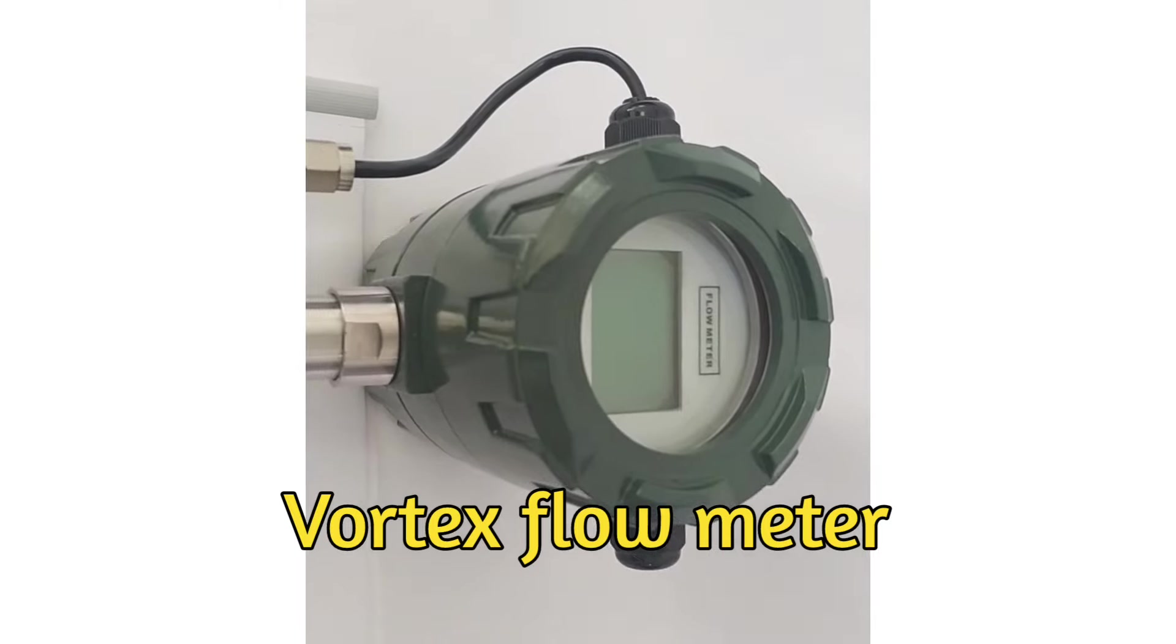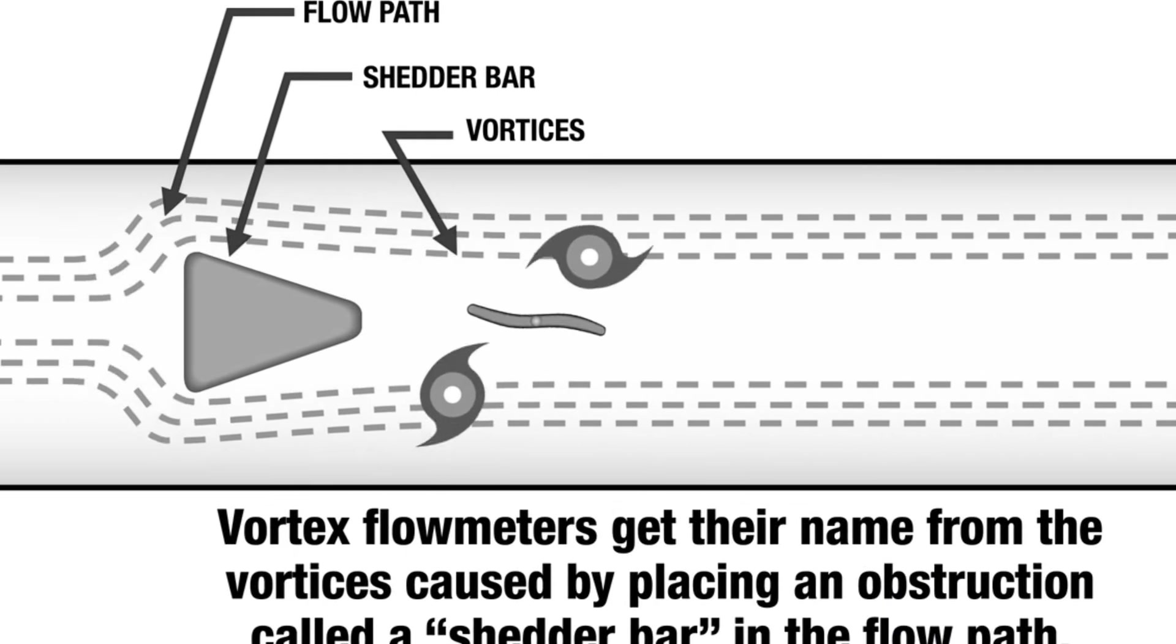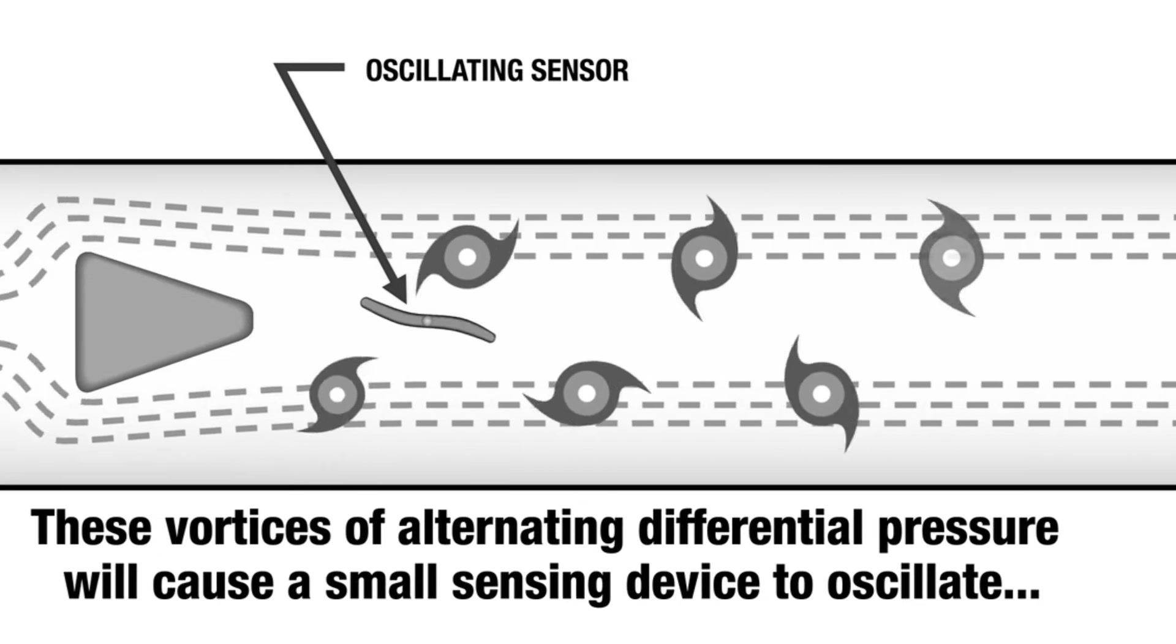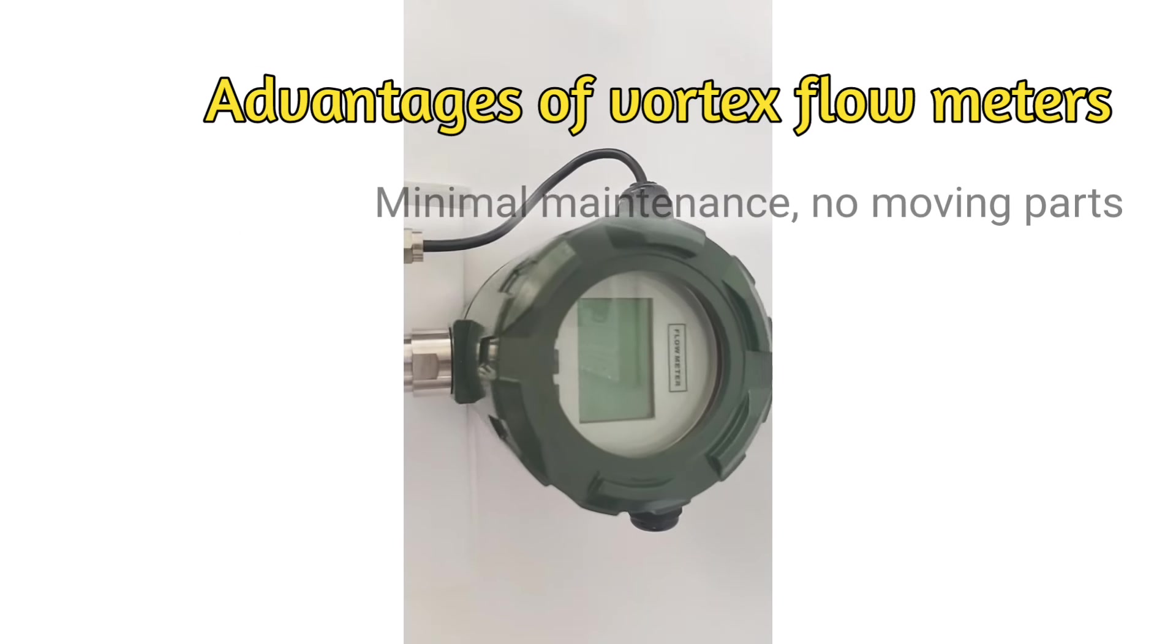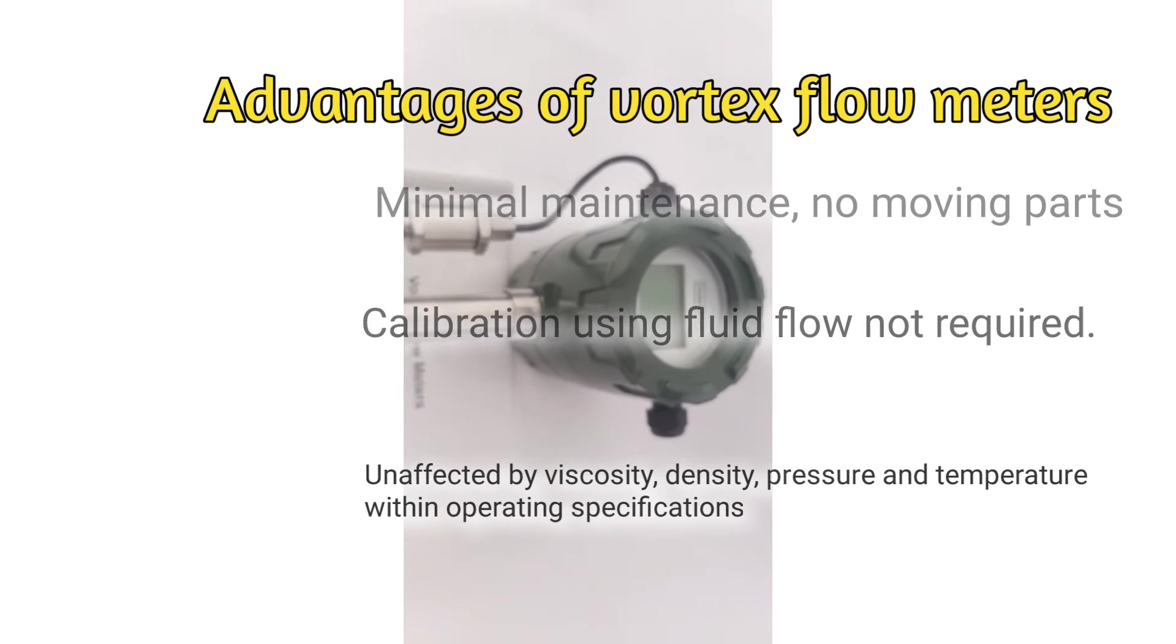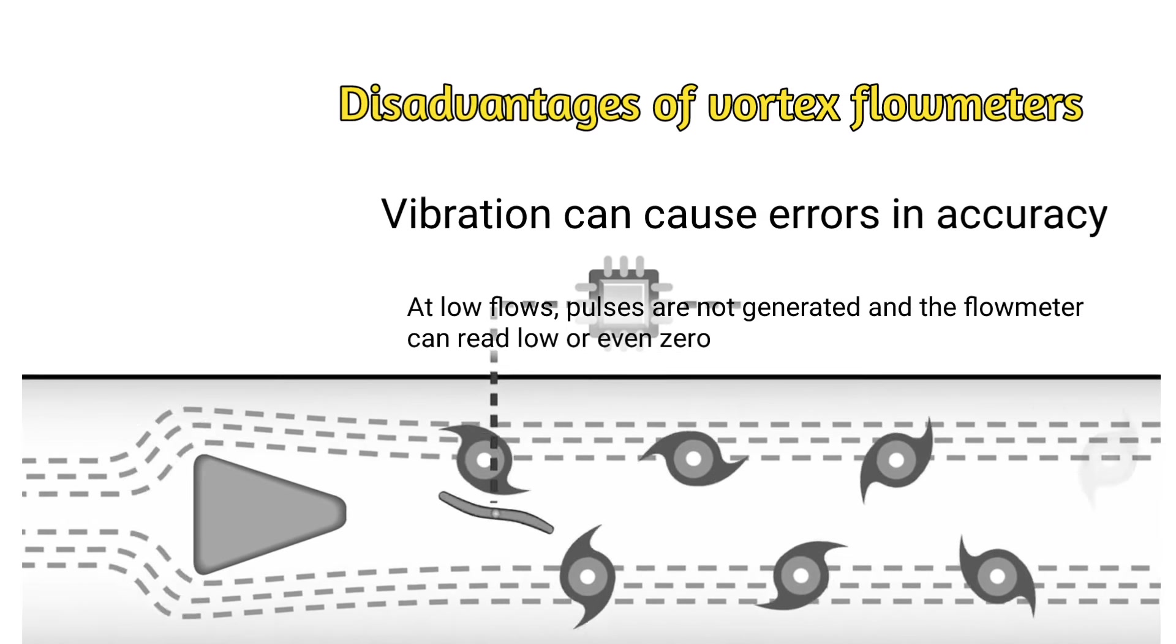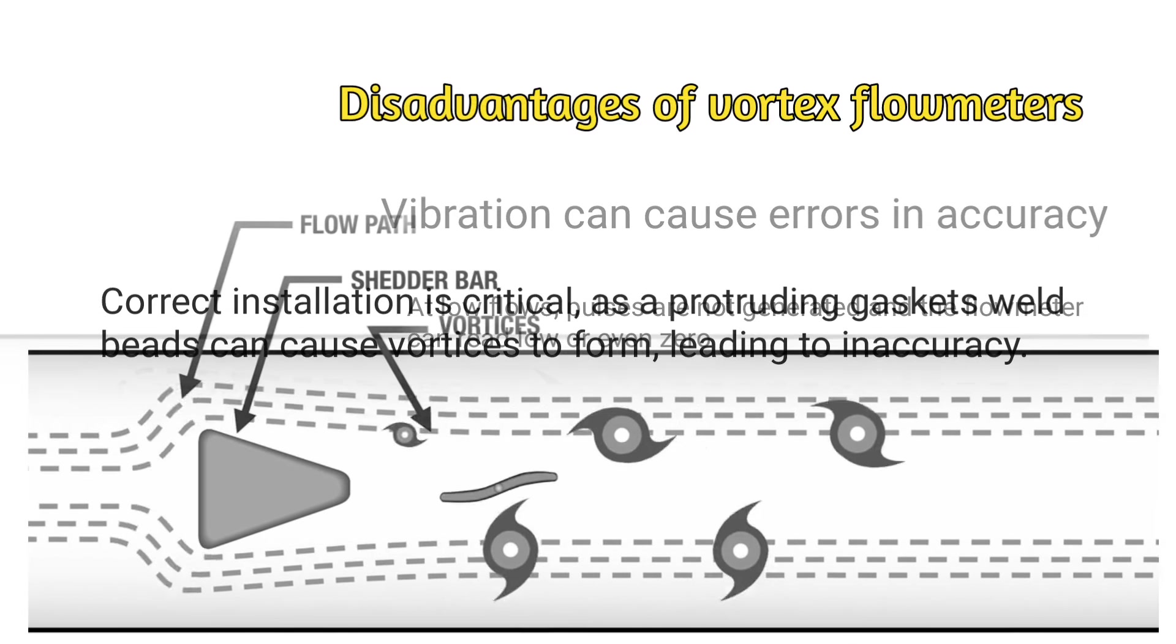Vortex flow meters are among the most versatile as they can measure liquids, steam, and gases with relative ease. An obstruction is placed across the pipe bore at right angle to fluid flow. As fluid flows, vortices are shed from alternating sides of the body, and this shedding frequency is directly proportional to fluid velocity. Detection of the vortices by means of pressure changes. Advantages: minimal maintenance, no moving parts, calibration using fluid flow not required, unaffected by viscosity, density, pressure, and temperature within operating specification. Disadvantages: vibration can cause errors in accuracy, at low flows pulses are not generated and the flow meter can read low or even zero, correct installation is critical as a protruding gasket or weld beads can cause vortices to form leading to inaccuracy.